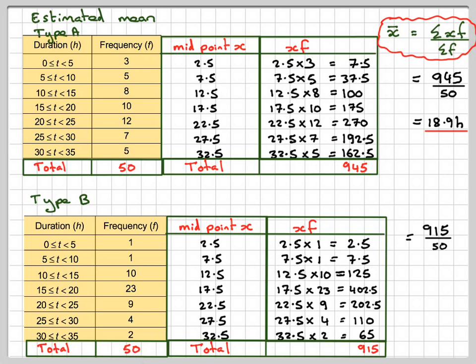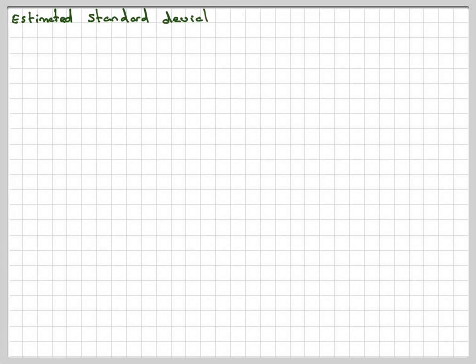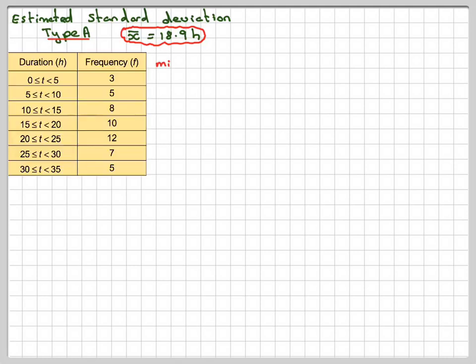Estimated standard deviation Type A. We know that the mean was 18.9 hours. So this is what we do: we take again the midpoints.